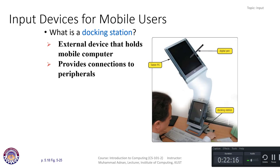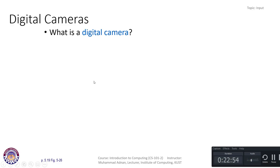We also have a docking station, which is an external device that holds mobile computers. The mobile computer is further connected with a keyboard or CD-ROM drive. The docking station can hold a digital pen, tablet PC, or anything you want. It provides connections to peripherals, and the data is passed further to the computer system.